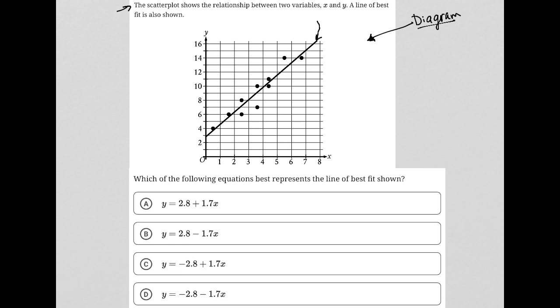Here is our line of best fit. We can see our scatter plot with these points kind of around that line. Some are below, some are above. None of them are actually really on the line. The question goes on to say, which of the following equations best represents the line of best fit?